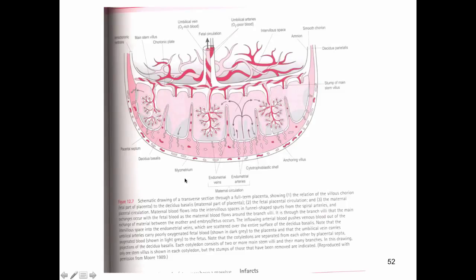Just another view of this placenta. You can see this disc-shaped placenta. You can see the lobes, sometimes referred to as cotyledons. You can see these chorionic villi extending out from the chorionic plate and then leading to the umbilical cord.